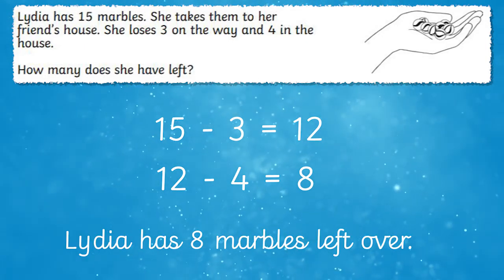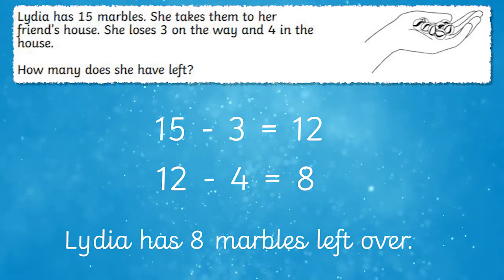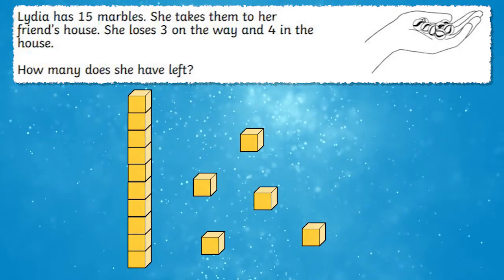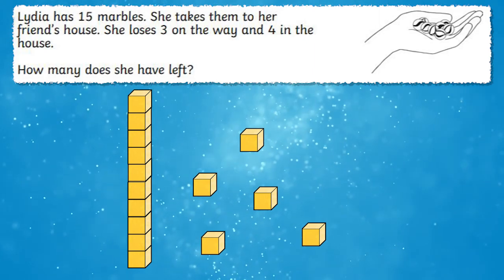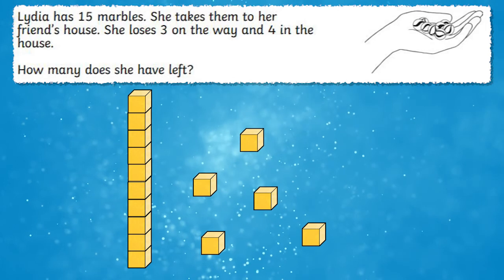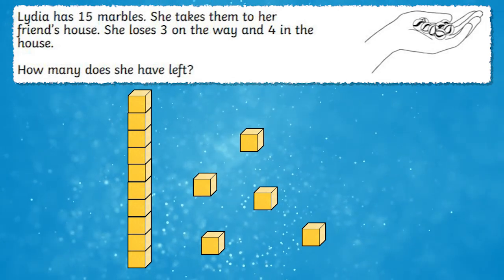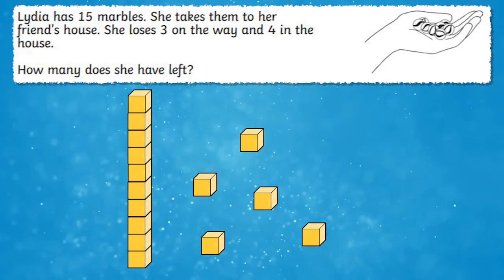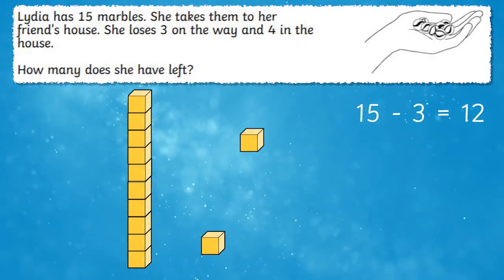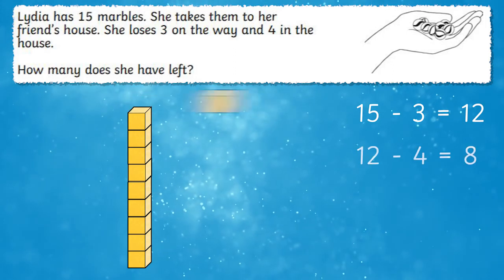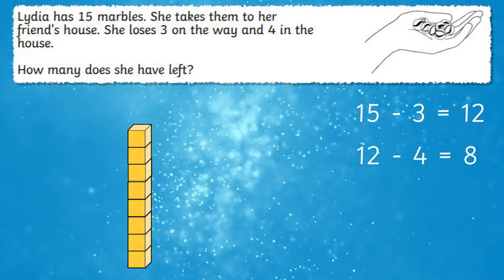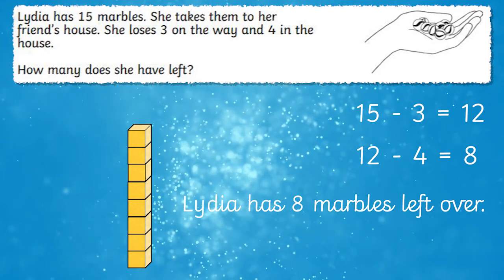Of course children can use equipment to help them with this too. Let's take a look. Lydia begins with 15 marbles, so we're representing this with a 10 stick and 5 ones making 15 altogether. She takes these 15 marbles to her friend's house but she loses three along the way, so we remove three of our cubes. Now we remove four of them because she loses those in the house too. Then we count what's left over to find how many marbles Lydia has got.